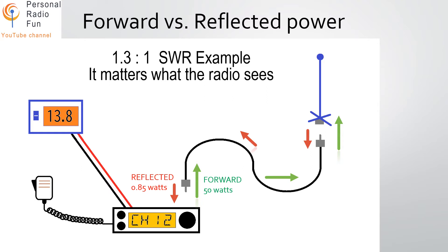Here's what's actually happening: we have a radio at the bottom, and the green arrow represents the transmitting power — in this case 50 watts out of the radio. That power goes through the coax and into the antenna, and some of it gets reflected back. The smaller red arrow shows 0.85 watts reflected back into the radio. This is an example of a 1.3 to 1 SWR.